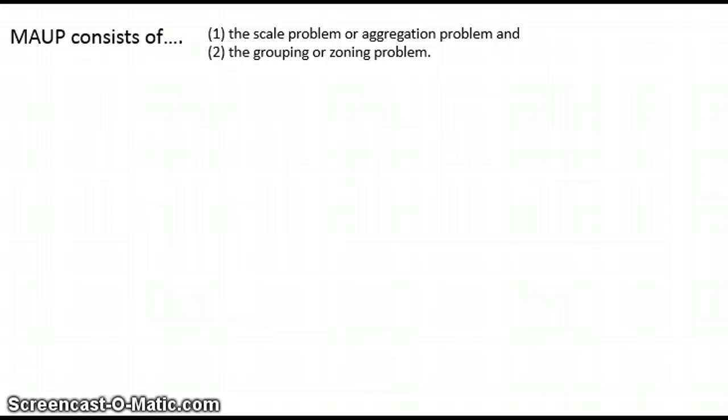Essentially, it's been long recognized as a problem since the 1970s and occurs when the spatial pattern of a variable can be completely modified according to the level of aggregation of spatial units.